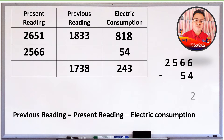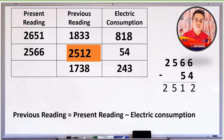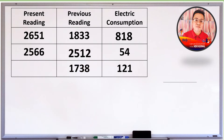6 minus 4 is 2. 6 minus 5 is 1. Bring down 5. Bring down 2. Ang ating previous reading ay 2,512 kWh. Sa pangatlong example naman ay unknown ang present reading.